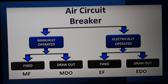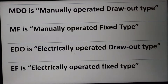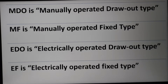So first we will see the full forms: EDO, MDO, EF, MF. MDO is nothing but manually operated draw type breaker. MF is manually operated fixed type breaker. The difference between EDO and MDO lies in the way that the springs are charged. In an electrically operated draw breaker, there is a spring that is charged by a spring motor, but in MDO there is no automatic charging mechanism — you have to manually charge the spring.